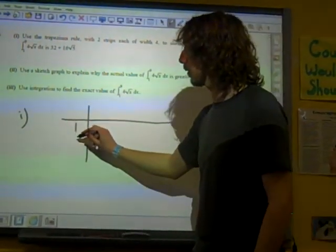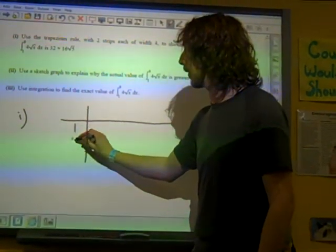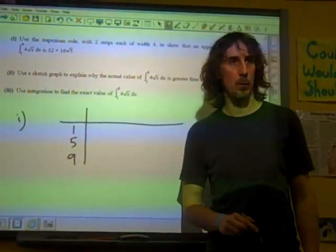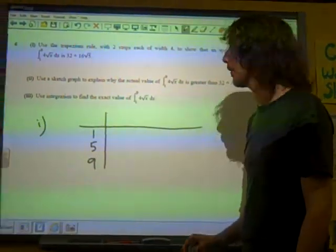Each of width four, so I've got one, and then I've got the value of five, and I've got the value of nine. And so that will give me my two strips in between those values.